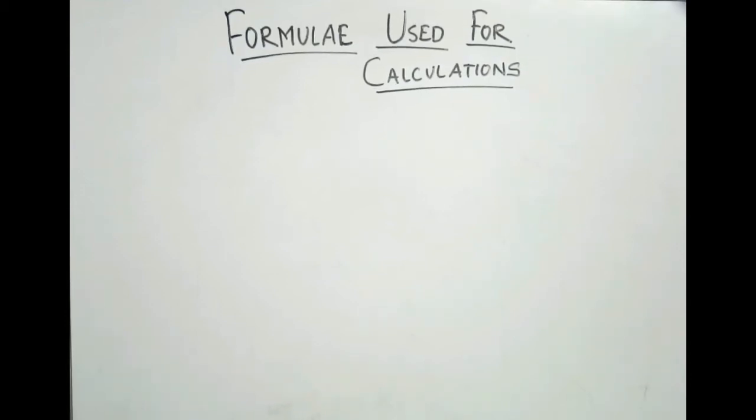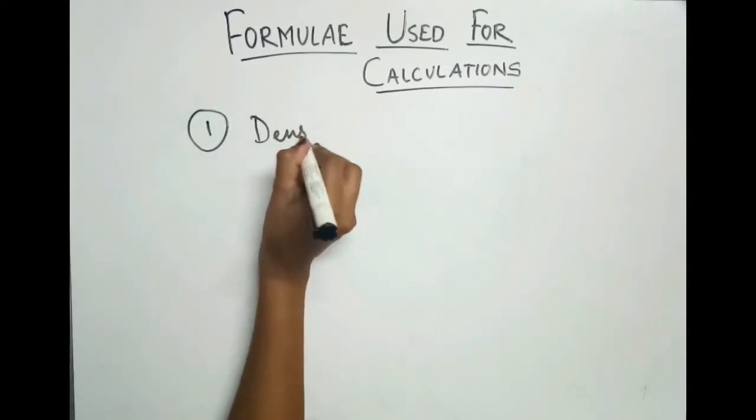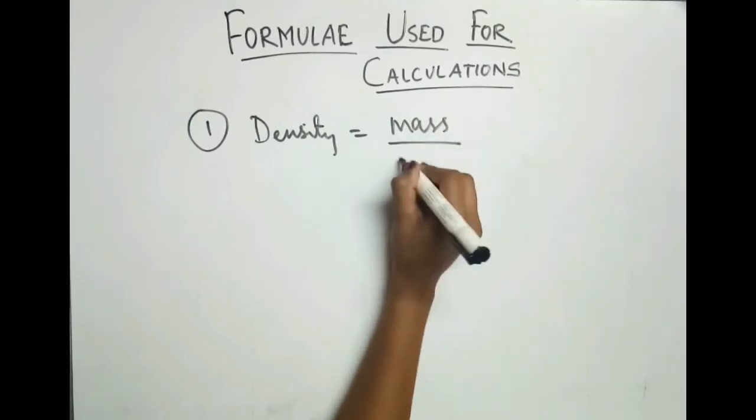Hello friends, today we will see various formulas which are used for calculations in pharmacy. The first formula is density equals mass upon volume.